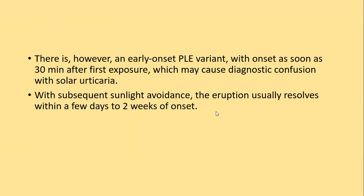There is however an early onset polymorphic light eruption variant, with onset as soon as 30 minutes after first exposure, which may cause some diagnostic confusion with solar urticaria. With subsequent sunlight avoidance, the eruption usually resolves within a few days to two weeks of onset.